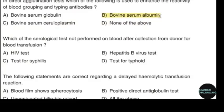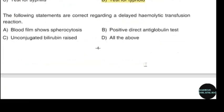Which serological test is not performed on blood collected from a donor for blood transfusion? Correct answer: option D — Test for typhoid. Which of the following statements are correct regarding a delayed hemolytic transfusion reaction? Correct answer: option D — All of the above.